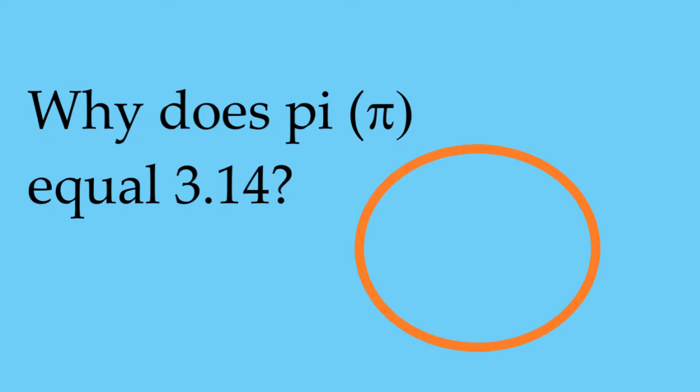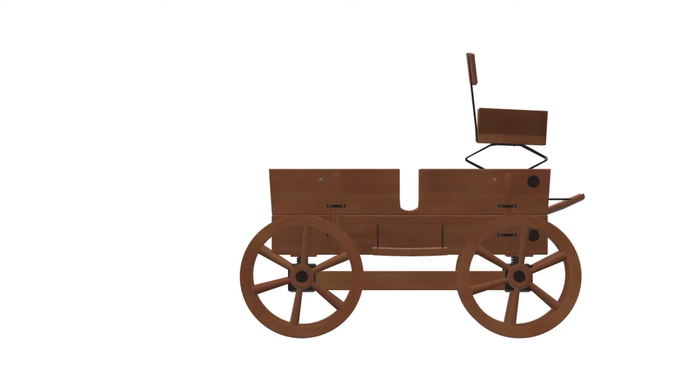Why does pi equal 3.14? People in antiquity would have known that there was a relationship between the length through two spokes of a wheel, that you can see here in yellow, and the distance around the wheel which you can see in blue.